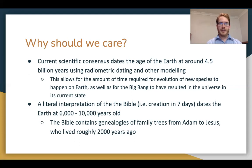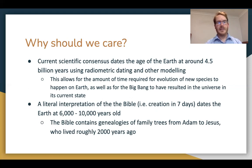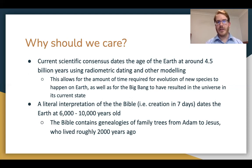A literal interpretation of the Bible gives us the account of creation in Genesis, where God made the earth and universe in seven days. The Bible also has genealogies — family trees from Adam and Eve right through to Jesus, who lived roughly 2,000 years ago. Adding up those family trees puts the date of the earth at about 6,000 to 10,000 years. That's quite a difference from 4.5 billion years.